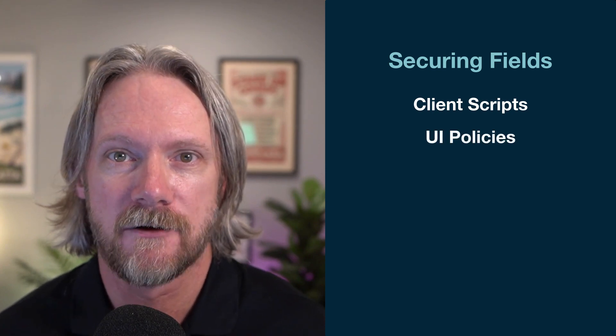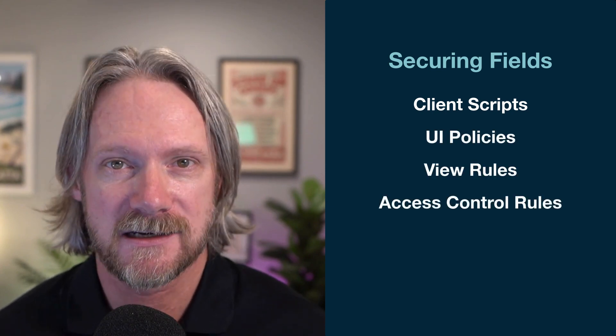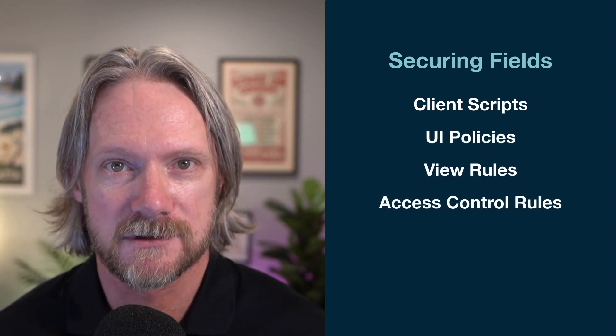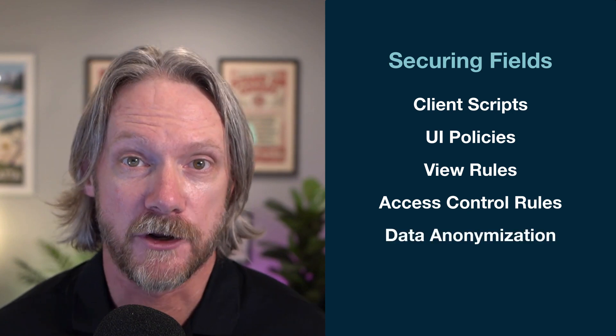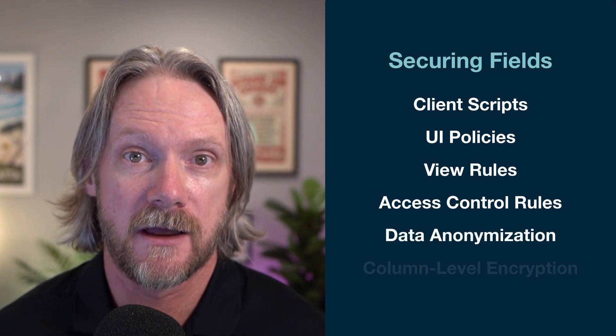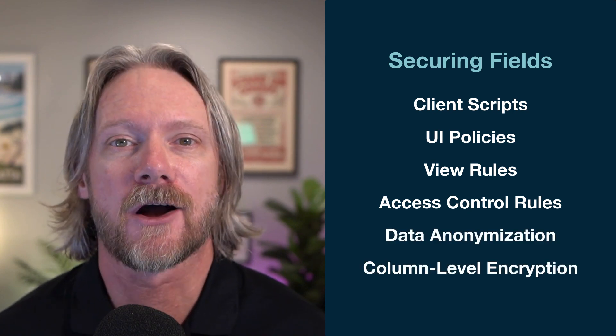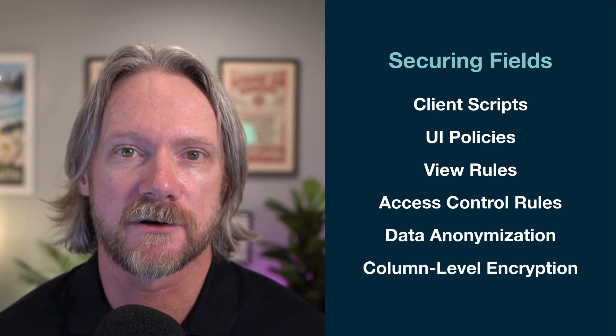Over the course of the next six videos we're going to take a look at the following configuration methods: client scripts, UI policies, view rules, access control rules, data anonymization, and finally column level encryption.